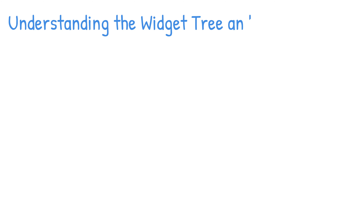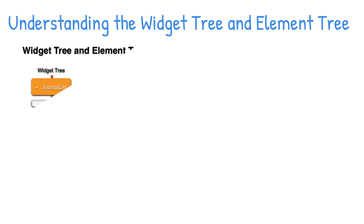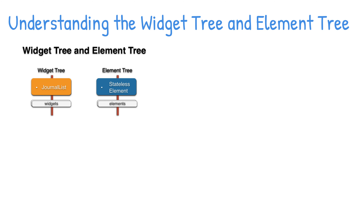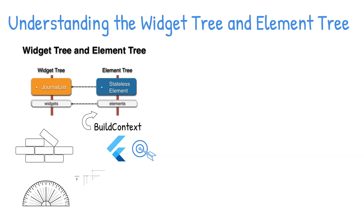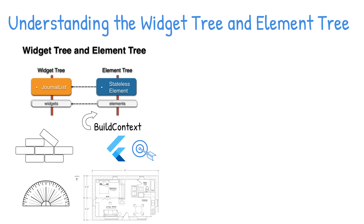Elements have a reference to the widget and are responsible for comparing widget differences. If a widget is responsible for building child widgets, then elements are created for each child widget. When you see the use of BuildContext objects, they are the element objects. The Flutter framework uses BuildContext objects to discourage you from manipulating the element objects directly. You'd be using widgets to create your UI layouts, but it's good to know how the Flutter framework is architected and how it works behind the scenes.